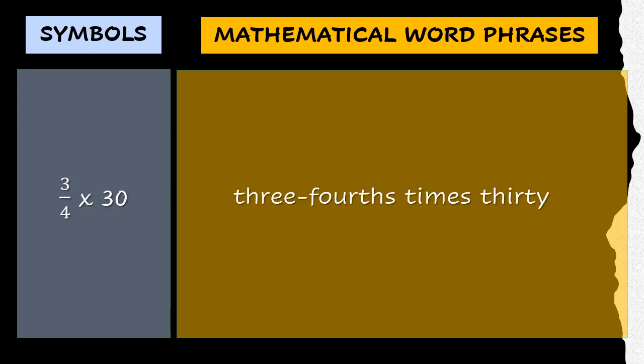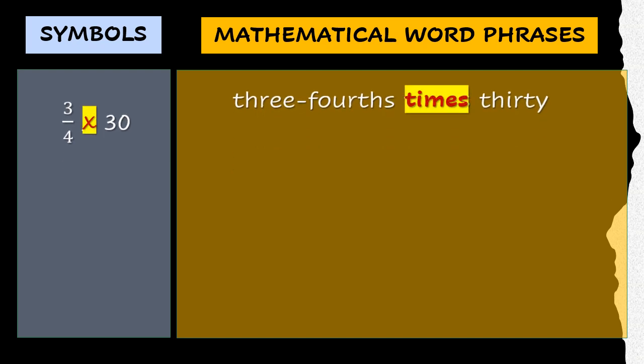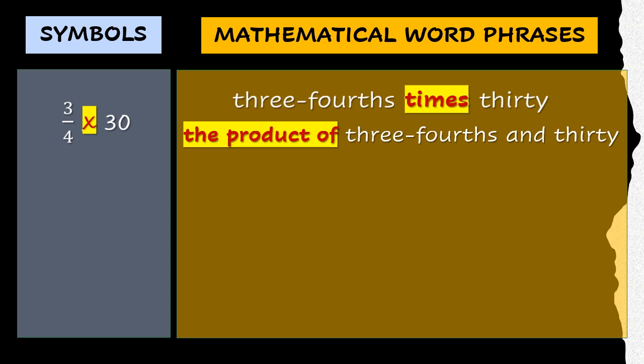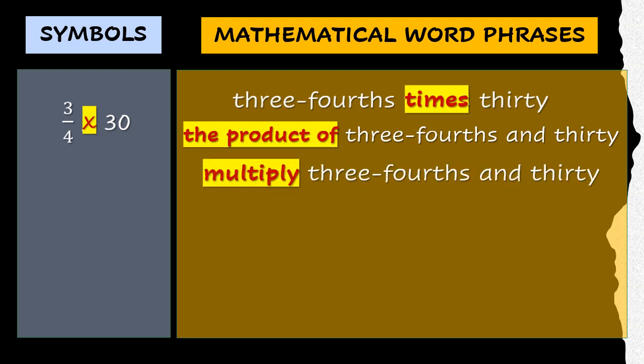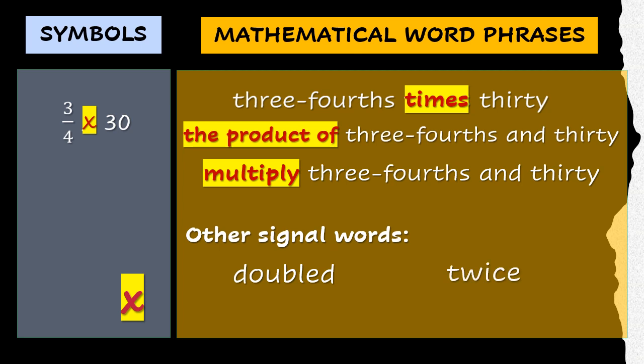Let's proceed to multiplication. Aside from the word times, we can have the product of and multiply. The signal words doubled and twice both mean multiplication by two, whereas tripled and thrice means you have to multiply by three. If you see two or more numbers written consecutively and each is enclosed by a pair of grouping symbols, or you see a constant and a variable written together without an operational symbol, then multiplication is involved. It's because multiplication is the default operation in algebra.